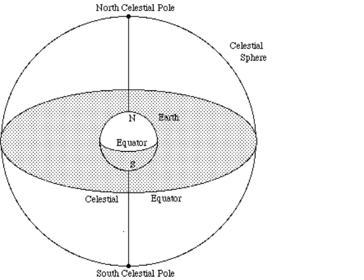Here is a simple celestial sphere — a very big globe, very, very big. It's round, it's a sphere, and our planet Earth is at the center. The Earth has an equator, and the celestial sphere has an equator. This celestial equator is directly above the Earth's equator.